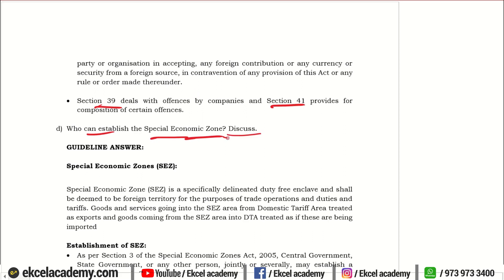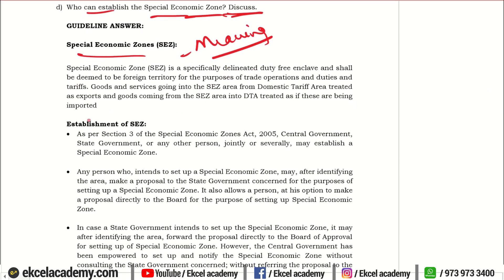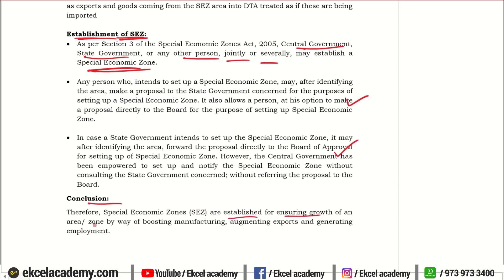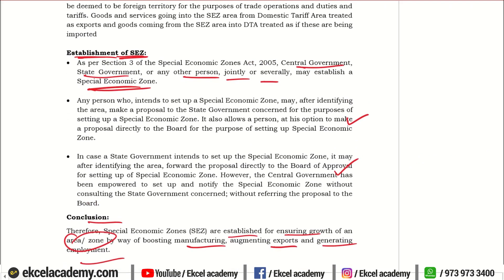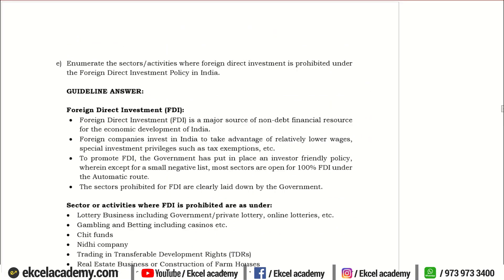Next: Who can establish a Special Economic Zone — discuss. Tell them what is a Special Economic Zone, what is its meaning and the purpose for which it is created. Thereafter talk about the establishment — who has the power. It is the central government, the state government, or any other person, jointly or severally, who may establish the Special Economic Zone. State the purpose of this establishment, and conclude that these zones are established for ensuring growth of the area by boosting manufacturing, augmenting exports, and generating employment.